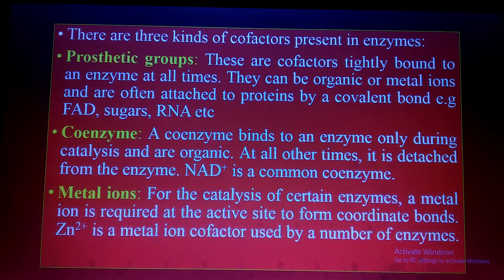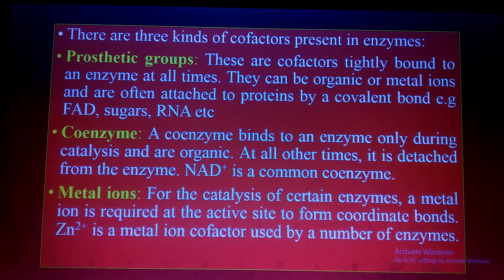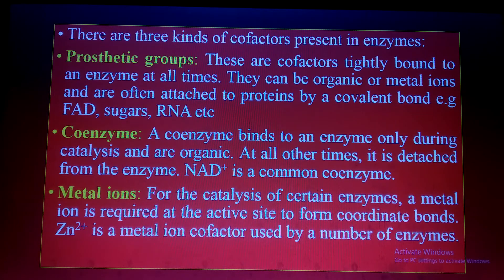For the catalysis of certain enzymes, a metal ion is required at the active site to form a coordinate bond. For example, zinc is a metal ion cofactor used by a number of enzymes, and copper is another example. So now you can see the difference between prosthetic groups, coenzymes, and metal ions.